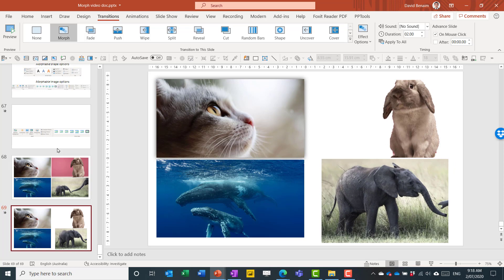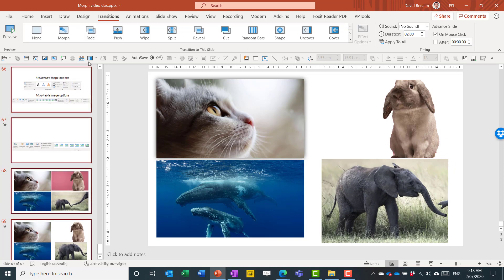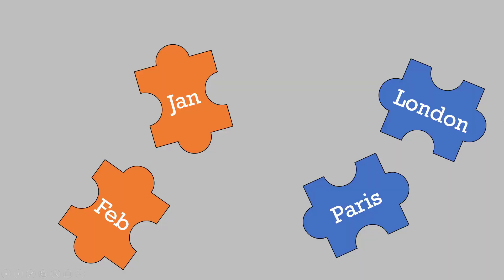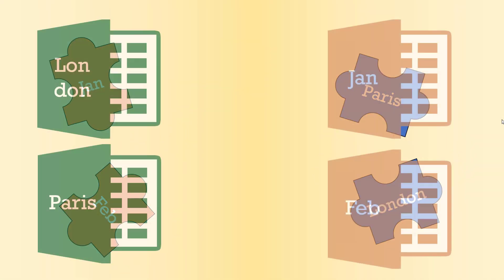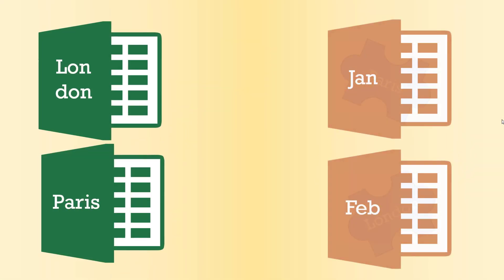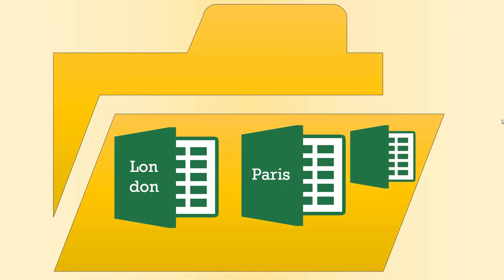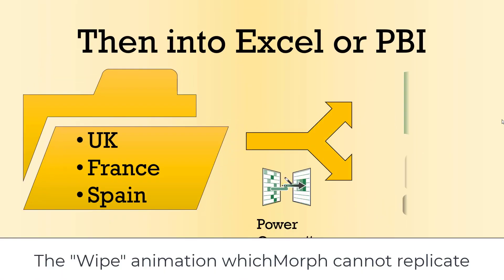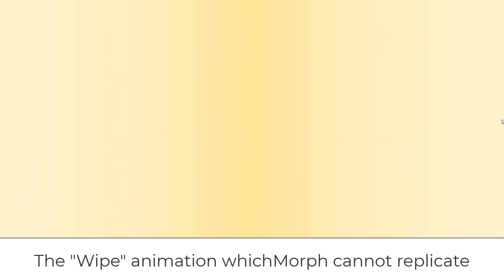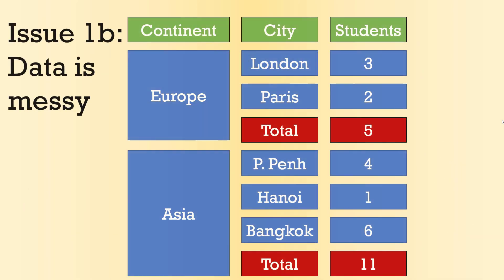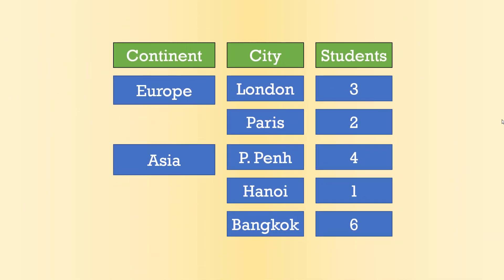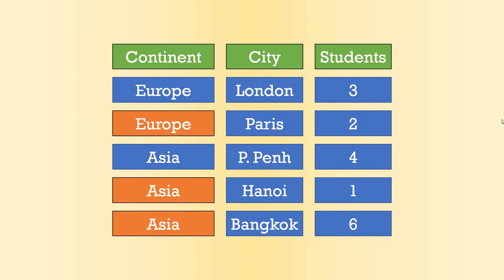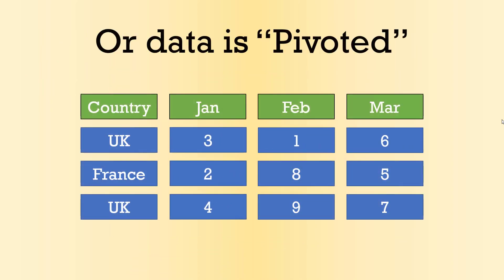You can apply Morph to multiple slides by multi-selecting them and clicking Morph. When I have a presentation, I use Morph on every slide — 99% of slides — because I devise my entire storytelling through Morph. That's what Morph really is: a way to tell a story in your presentation.